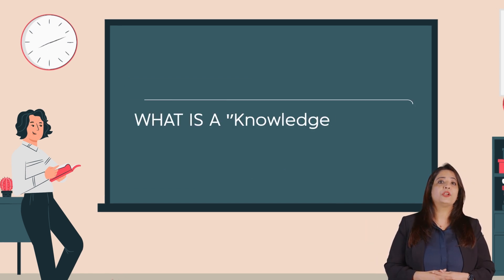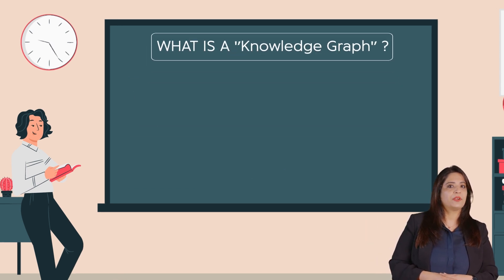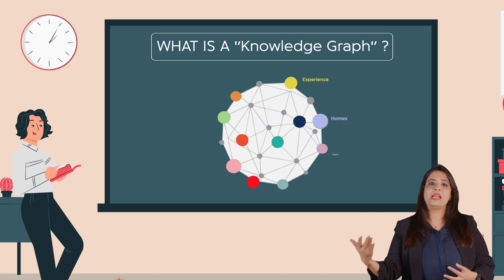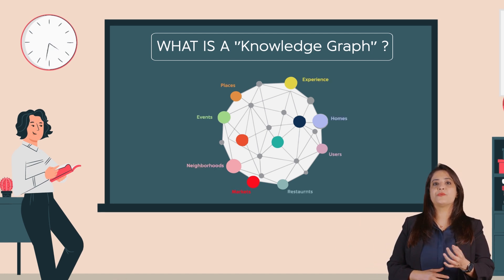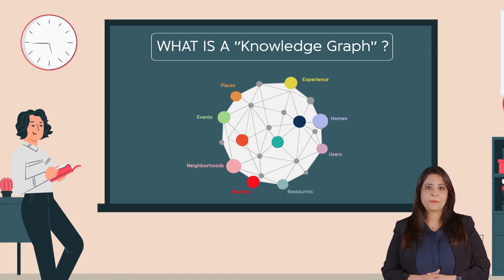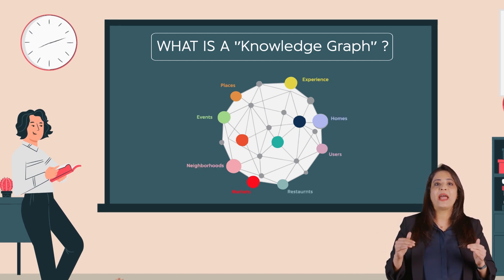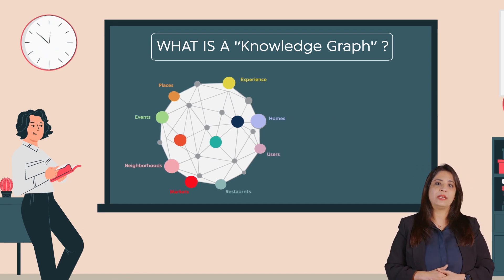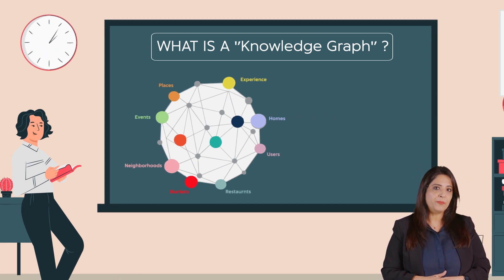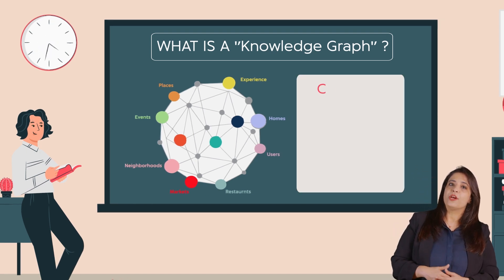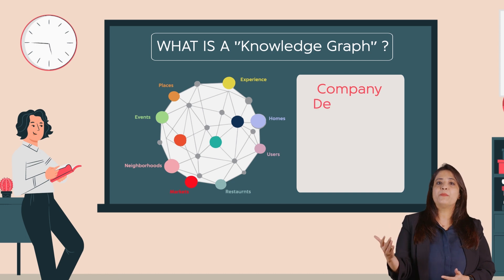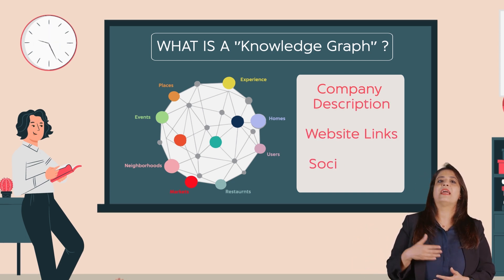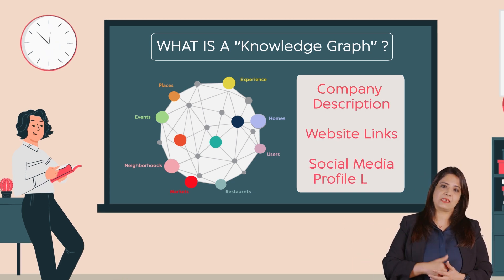Let us talk about the knowledge graph. The knowledge graph can be seen on the right side of the search engine results page as an answer to a branded search query. It is helpful in branding the company. Within the graph, you can see company descriptions, website links, and social media profile links.